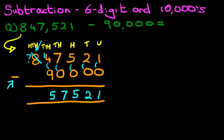And lastly, we've got the hundred-thousandths column. We've got seven minus zero is seven. It's as easy as that.